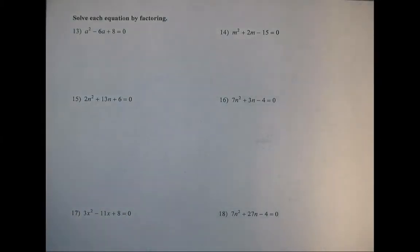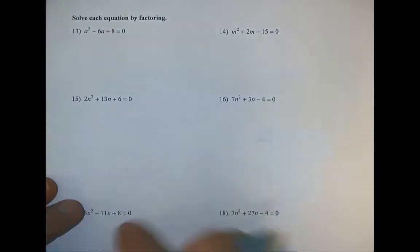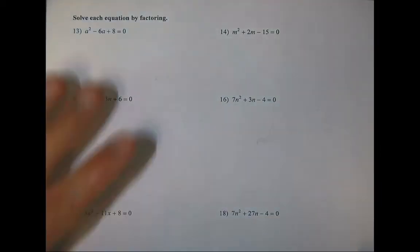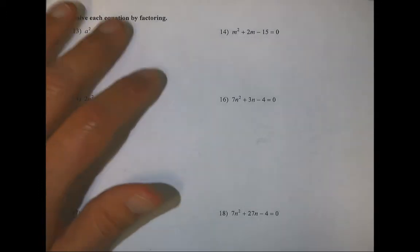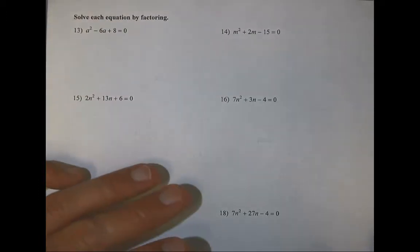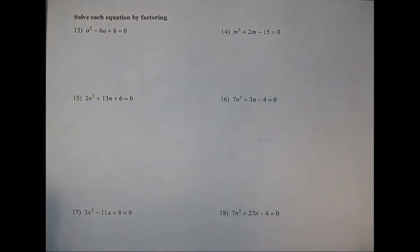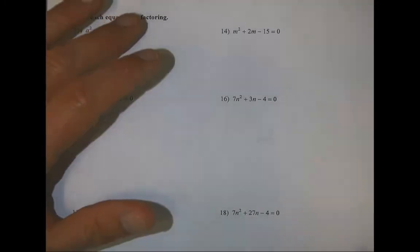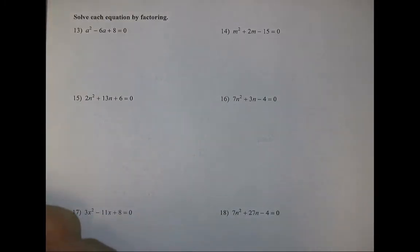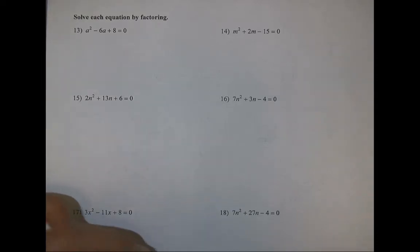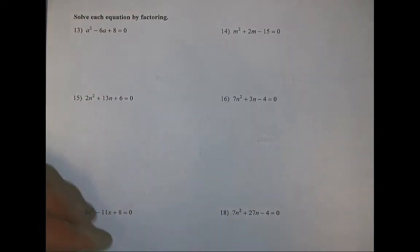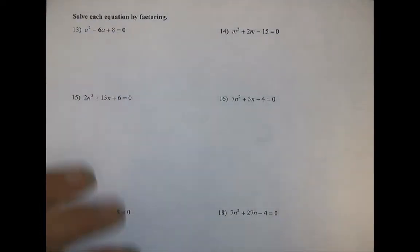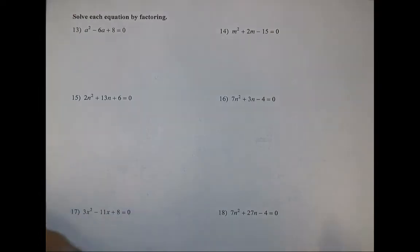We are on the back of the 12.5 worksheet number one. We're still going to be using the same skills of factoring, but we're taking it one step further. Now we have an equation set equal to zero, and we're going to figure out what numbers actually solve this through factoring. You can use the quadratic formula, but on the test you have to solve it through factoring to get credit.